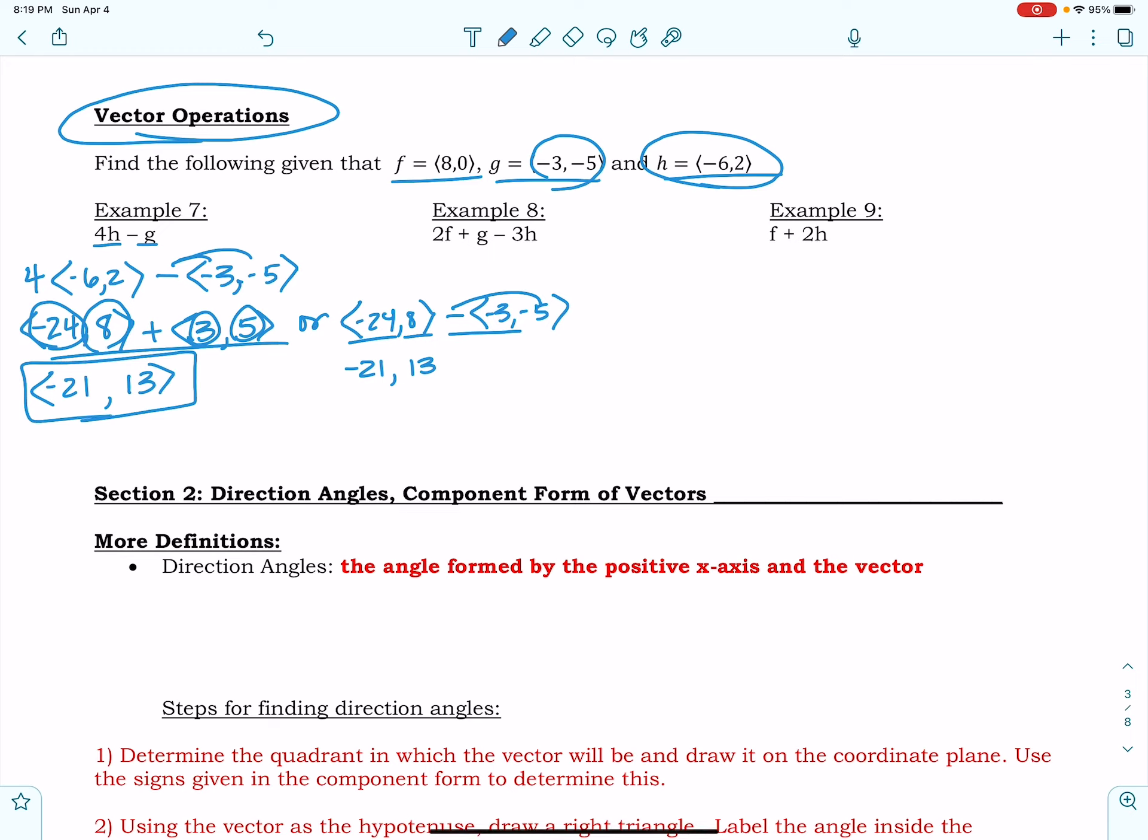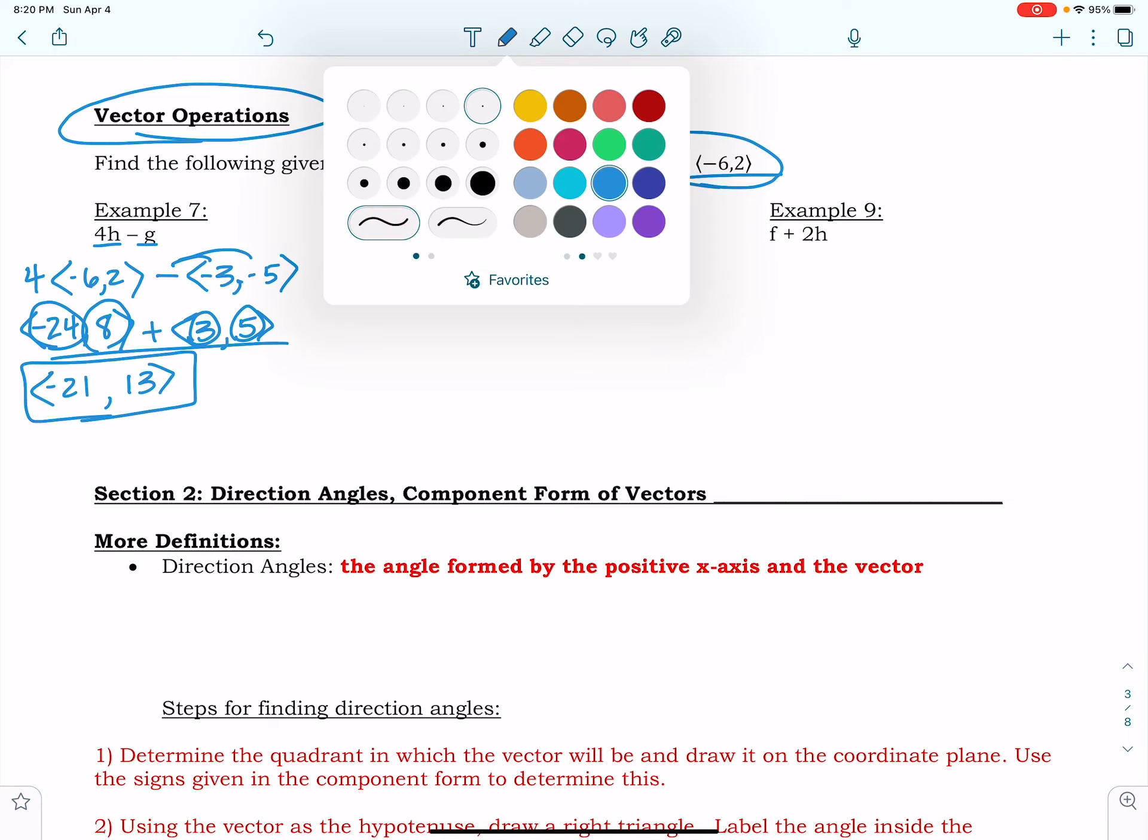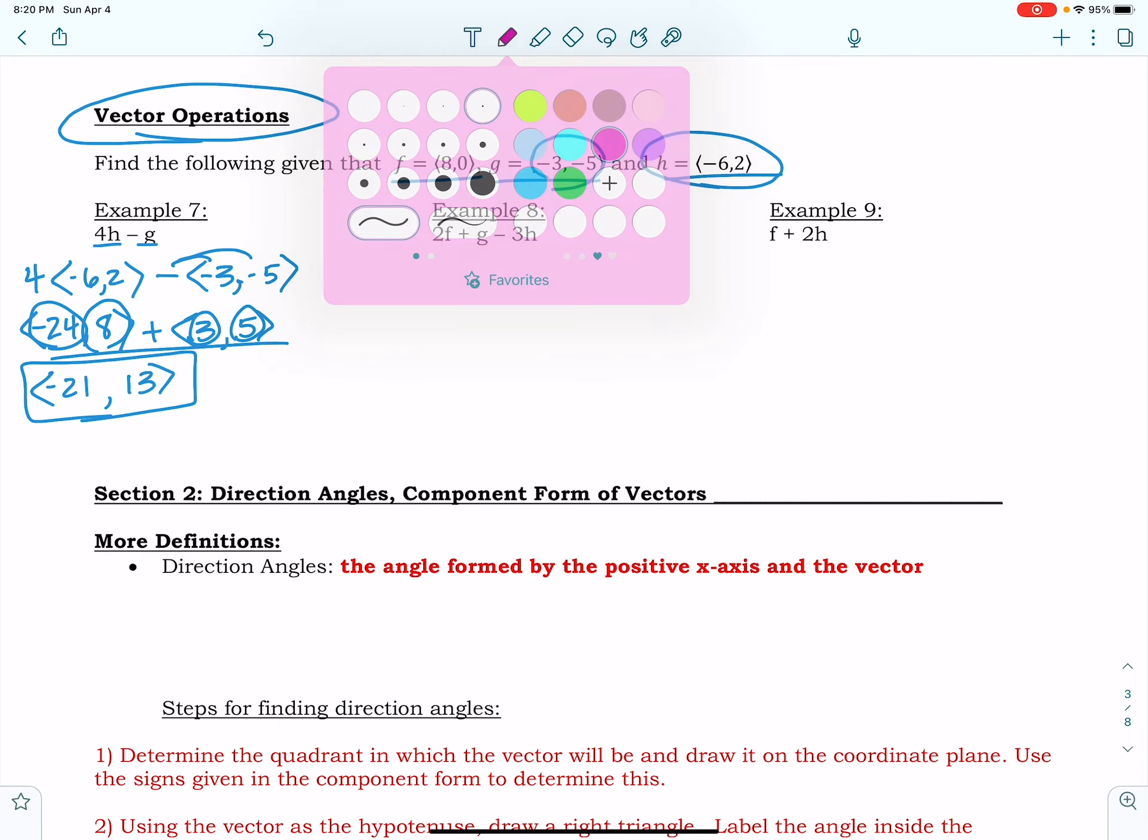Easy peasy, lemon squeezy. Alright, so let me get rid of this so I've got room to work here. Alright, so for example 8, let's do a fun color. Let's do a funner color. I know funner's not a word, I was kidding.